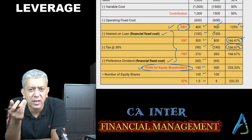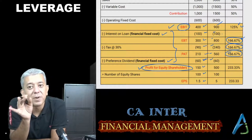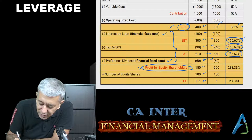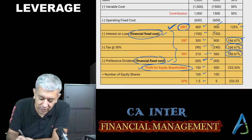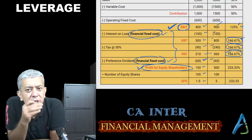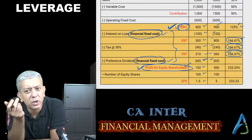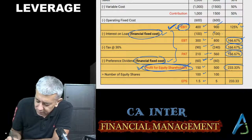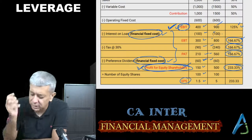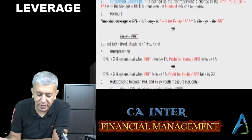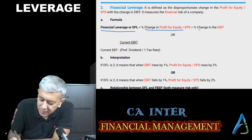Tax ke neeche utna hi change aayega jitna EBT mein aaya, phir PAT aa jaayega. PAT mein bhi utna hi change, lekin beech mein preference dividend — another fixed cost — toh phir se disproportionate change aa jaayega. So taking both financial fixed costs together — independent variable is EBIT, dependent variable is profit for equity shareholders. Financial leverage formula: percentage change in profit for equity (or EPS) divided by percentage change in EBIT.